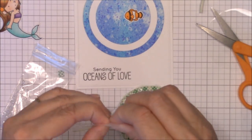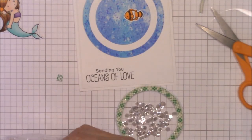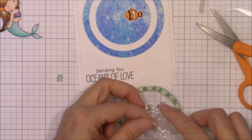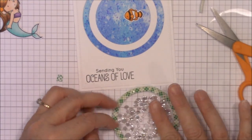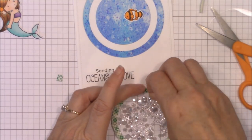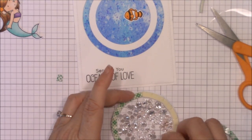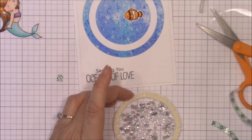MFT carries a huge selection of shaker pocket elements, so you have a ton of options. Once I've added enough shaker elements, I remove the release paper from that second layer of foam tape and adhere the second acetate circle to the back to enclose those sparkly sequins.